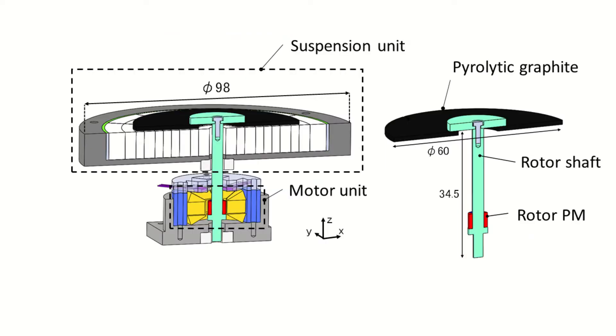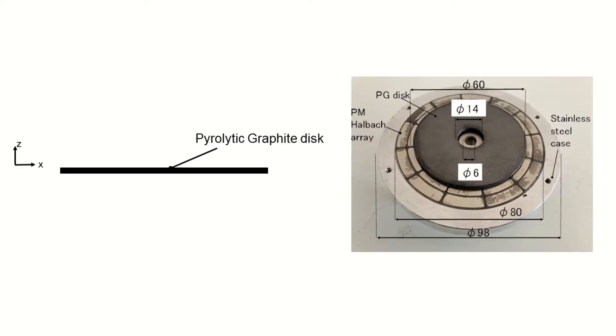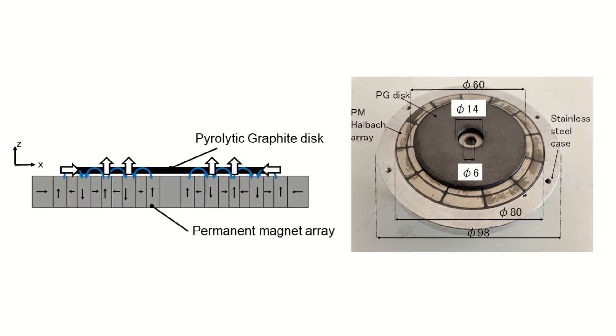This is a permanent magnet motor with a round diamagnetic sheet of pyrolytic graphite attached to a rotating shaft. The pyrolytic graphite is a material with relatively strong diamagnetic properties at normal room temperature. In other words, this material is repelled by magnetic fields.